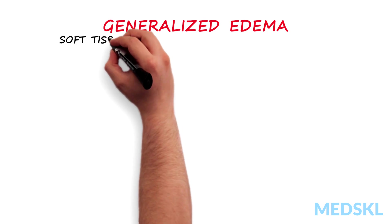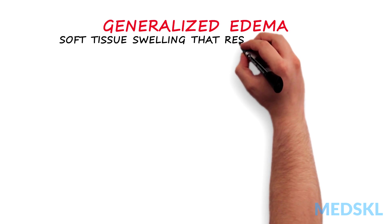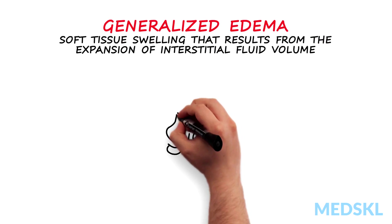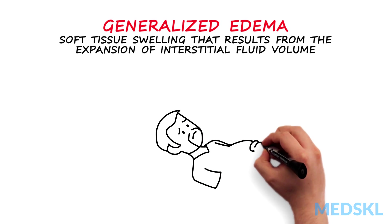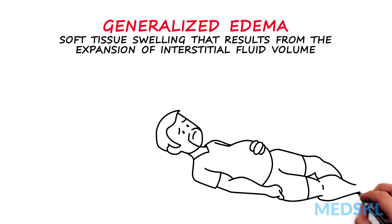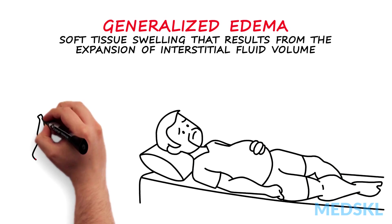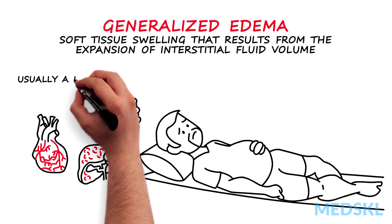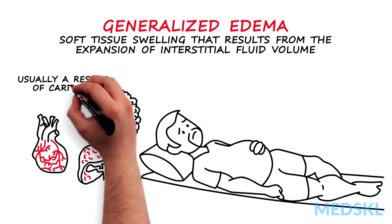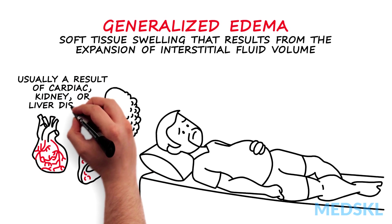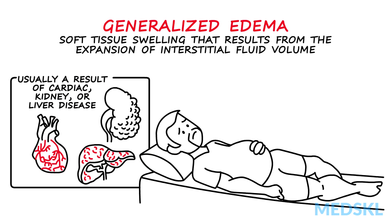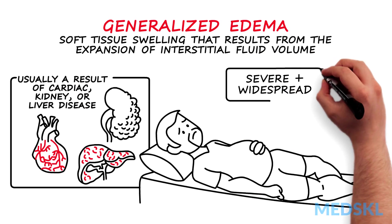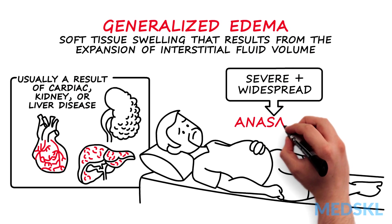Edema refers to soft tissue swelling that results from the expansion of interstitial fluid volume. Edema can be focal as a result of a local process such as inflammation or thrombosis, but generalized edema is usually a result of underlying cardiac, kidney, or liver diseases. When edema becomes severe and widespread, it is termed anasarca.